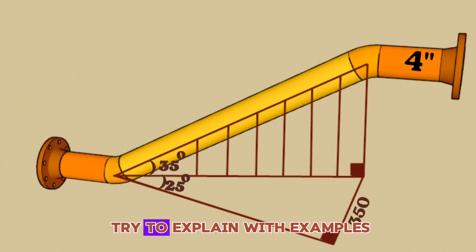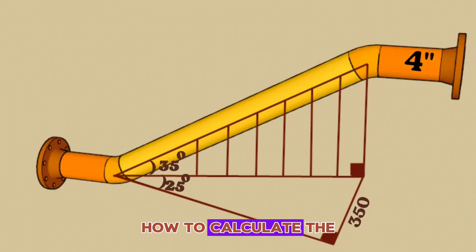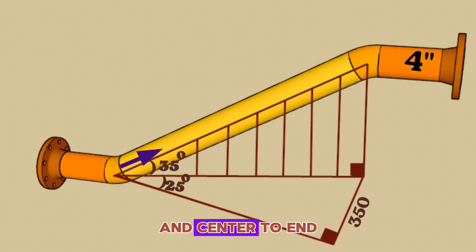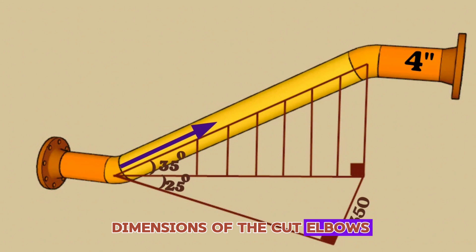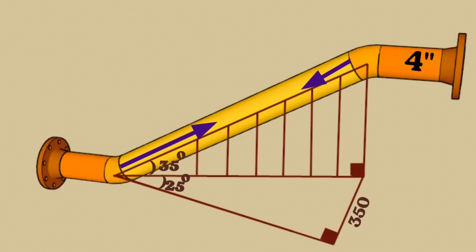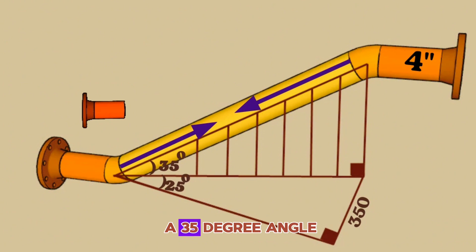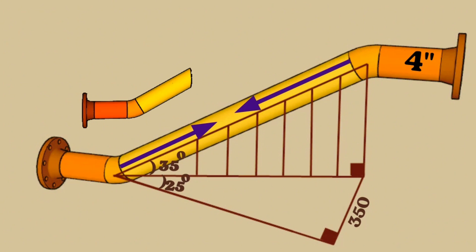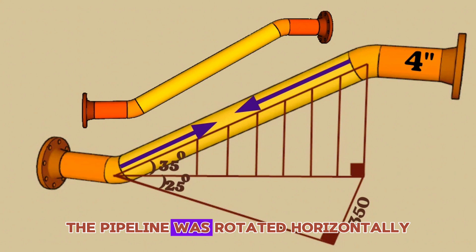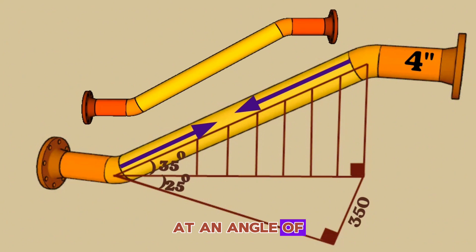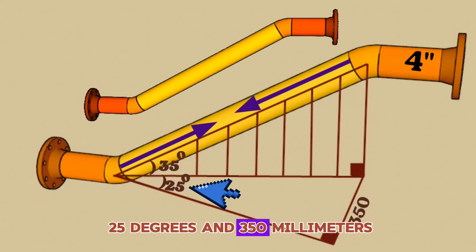In this video we tried to explain with examples how to calculate the length of the yellow pipe piece and center-to-end dimensions of the cut elbows in the 4-inch pipeline. As you see, the 4-inch pipeline comes horizontally, then goes up at a 35-degree angle and continues horizontally again. The pipeline was rotated horizontally at an angle of 25 degrees and 350 millimeters.